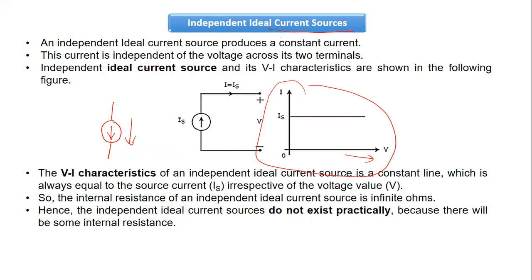For infinite duration, the value of current will remain constant. However, an ideal current source is a hypothetical source — it does not exist practically. In practice there will always be a certain reduction in the current measured at different points in time. We measure current using an ammeter, which is the device used to measure current.